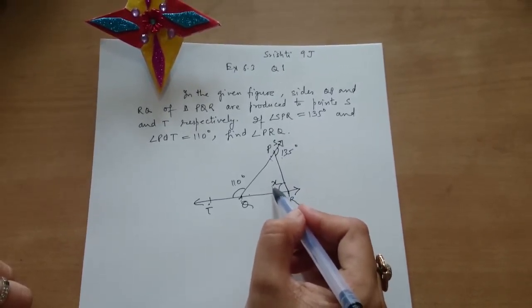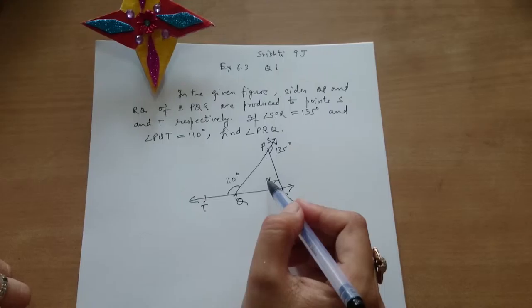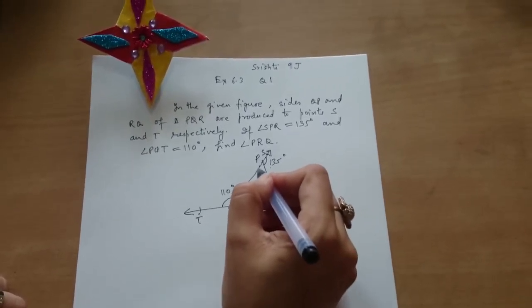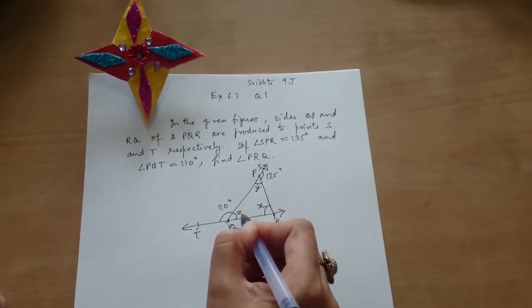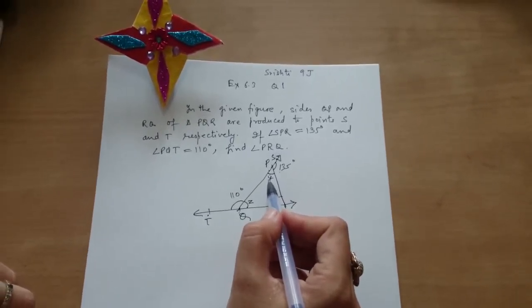I have labeled this as X. Now if I label this as Y and this as Z, can you tell me what will be Y?